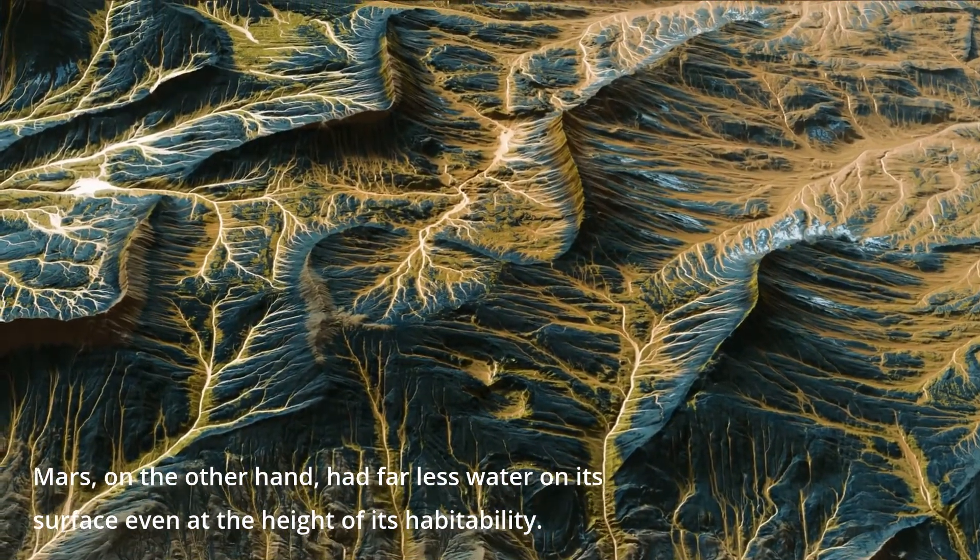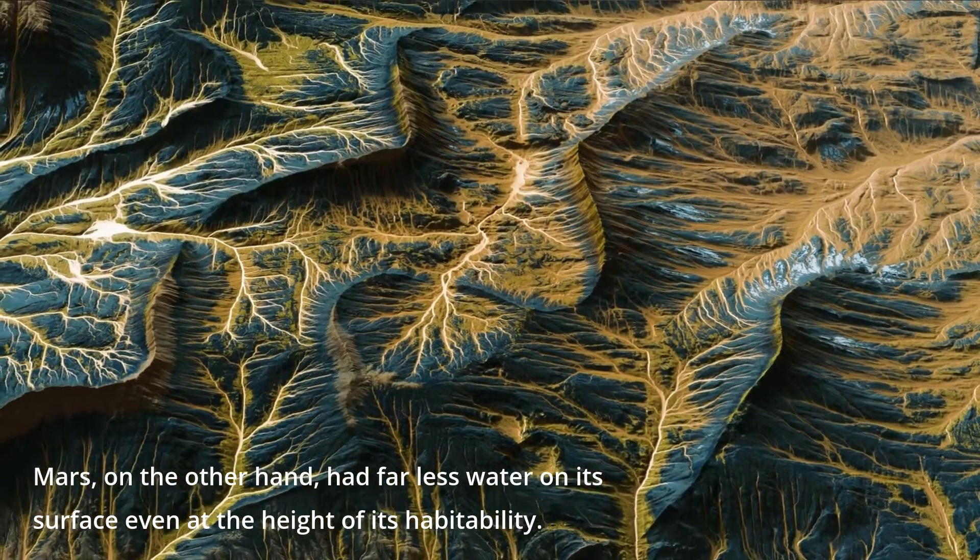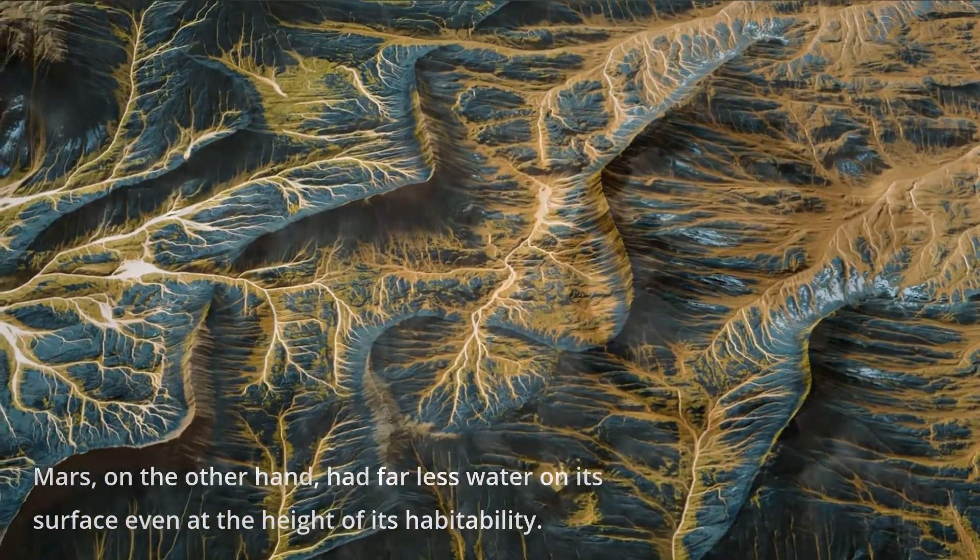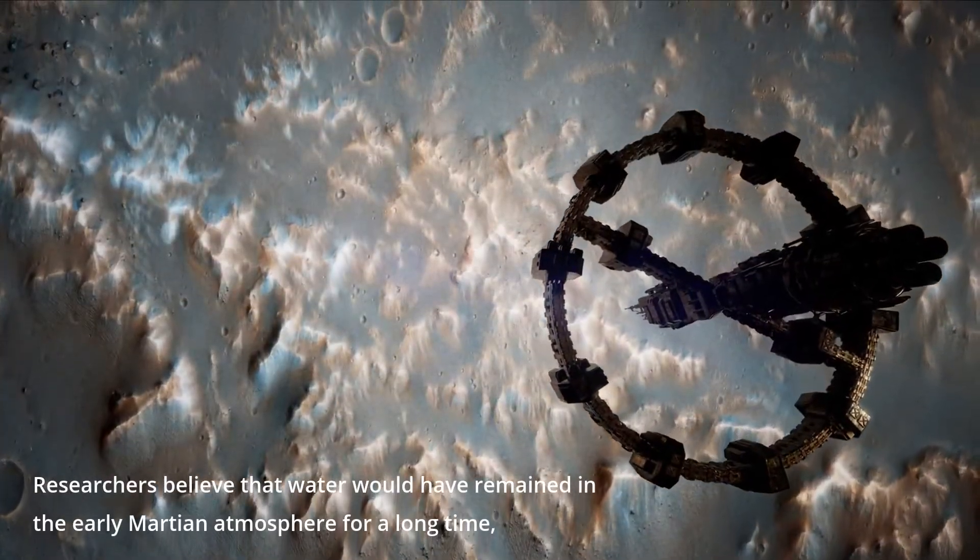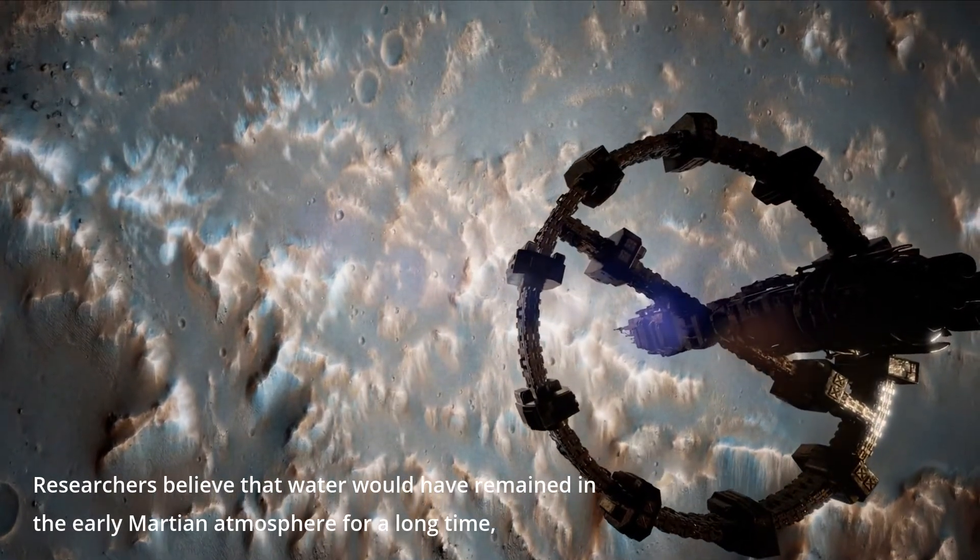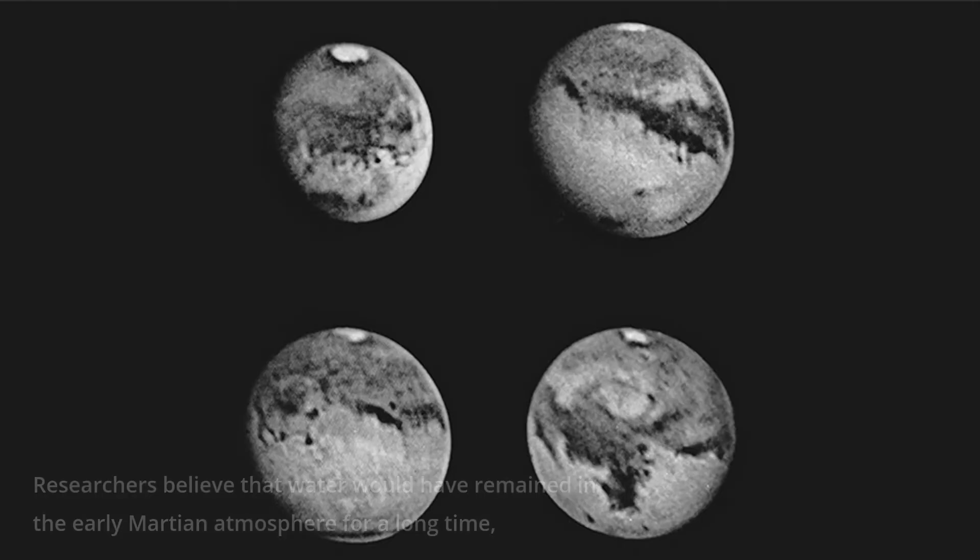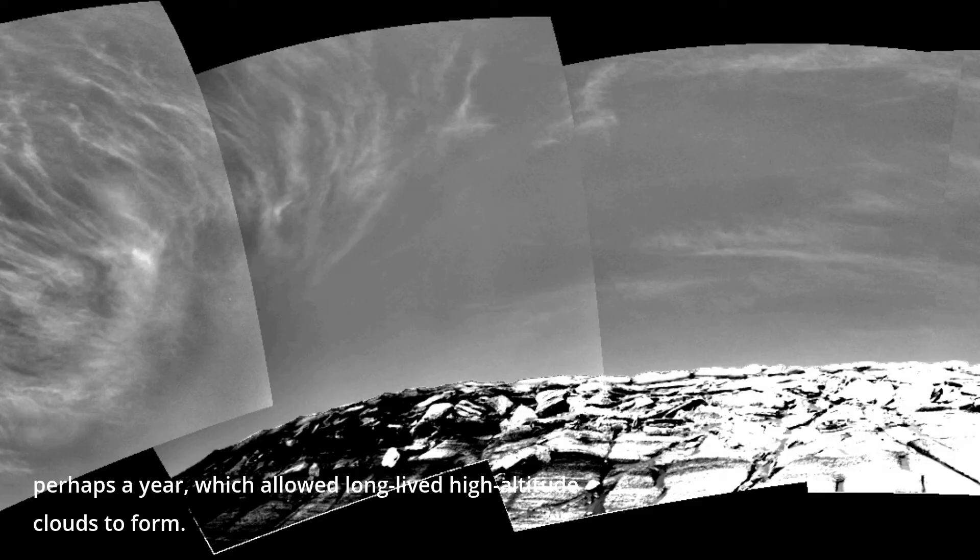Mars, on the other hand, had far less water on its surface even at the height of its habitability. Researchers believe that water would have remained in the early Martian atmosphere for a long time, perhaps a year, which allowed long-lived high-altitude clouds to form.